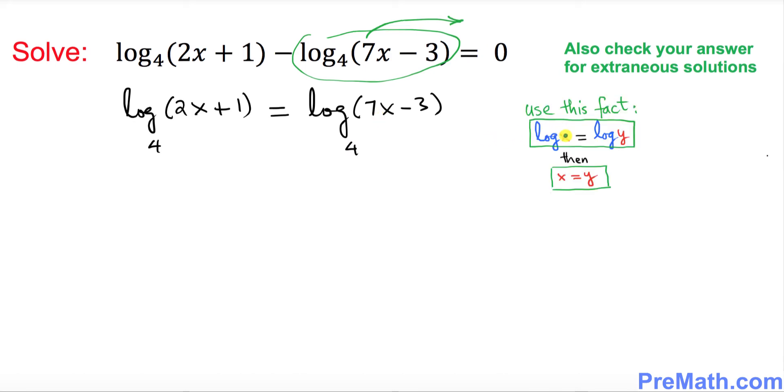And now in this next step we will be using this fact. If we have log of x equal to log of y, then we can simply write x equals y. The only condition is that the bases of the log must be the same. So over here you see that these two logs are the same. So that means I can say that this part equals that part. So in other words I can write 2x plus 1 equal to 7x minus 3 using this fact on the right hand side.